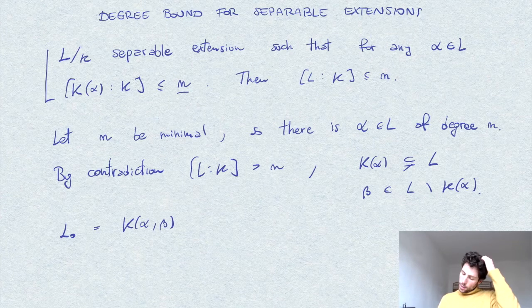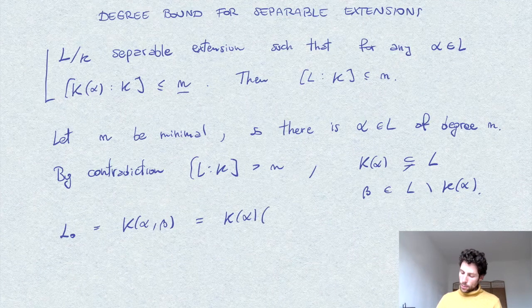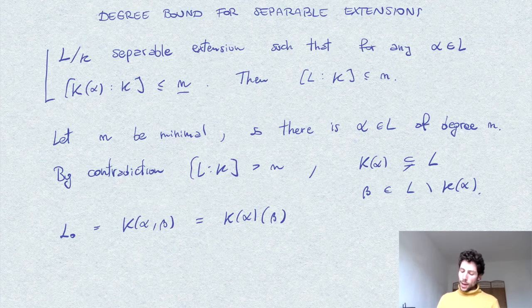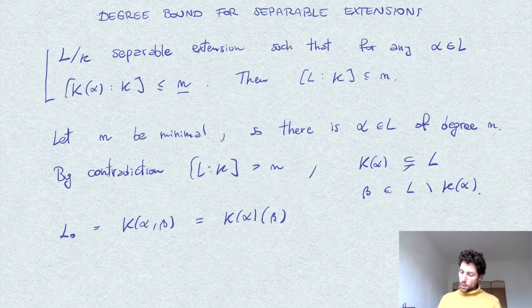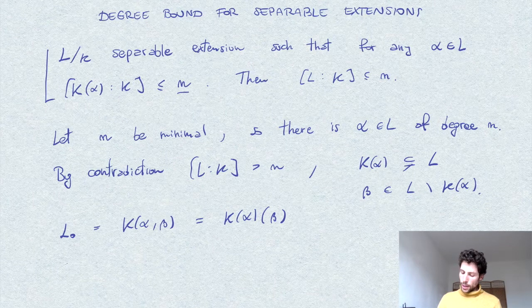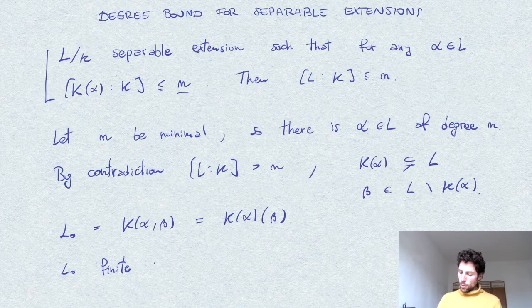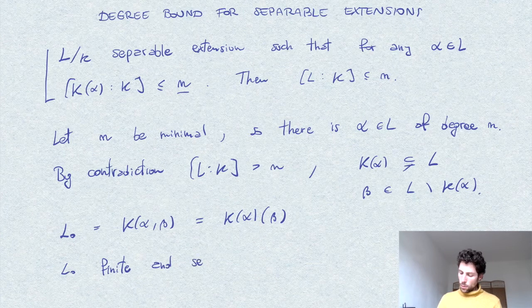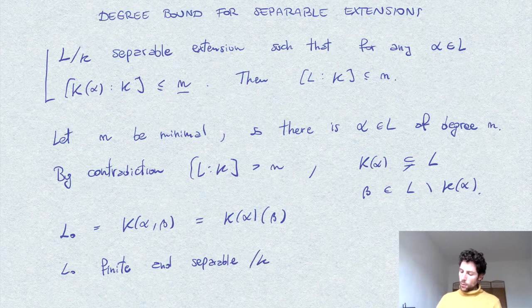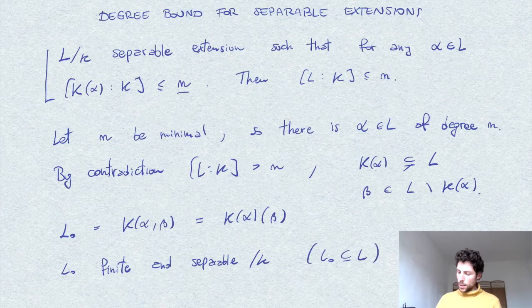I consider this extension as k of alpha extended by beta. Now, what we have is that it is a simple extension of k of alpha, which is finite. So L0 is finite and separable over k. Of course, separable, since it is a sub-extension of a separable extension.